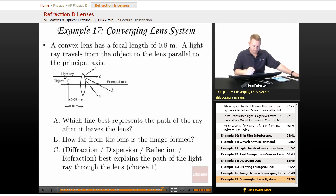Which line best represents the path of the ray after it leaves the lens? If the light ray is coming in parallel, which one's going to show its shape after it leaves the lens? Well, that's gotta be number 3 there. Coming in parallel, you get refracted through the far focal point.